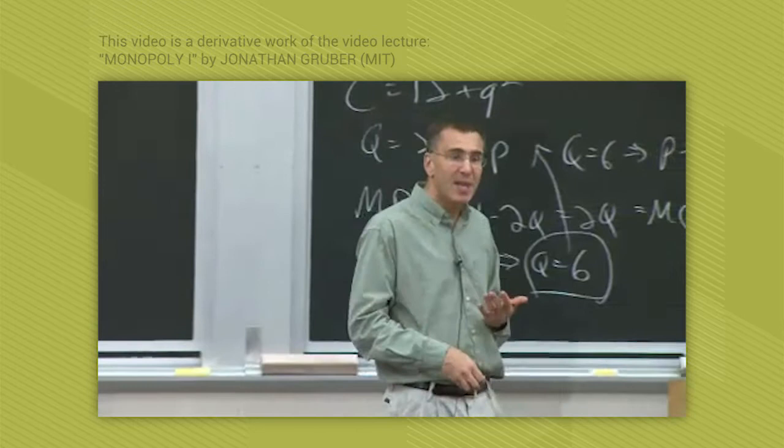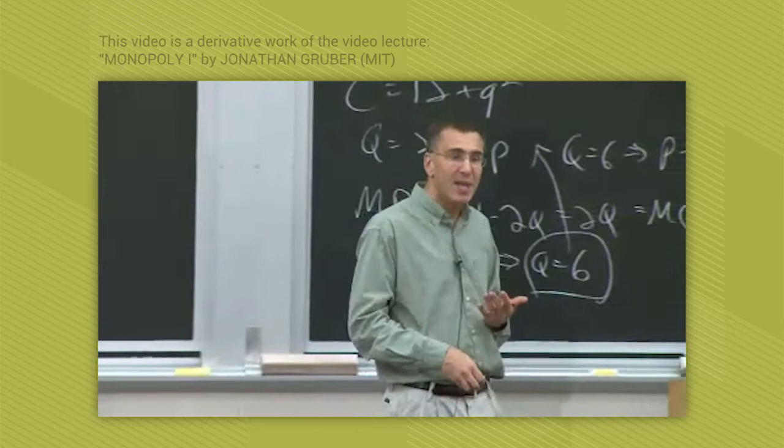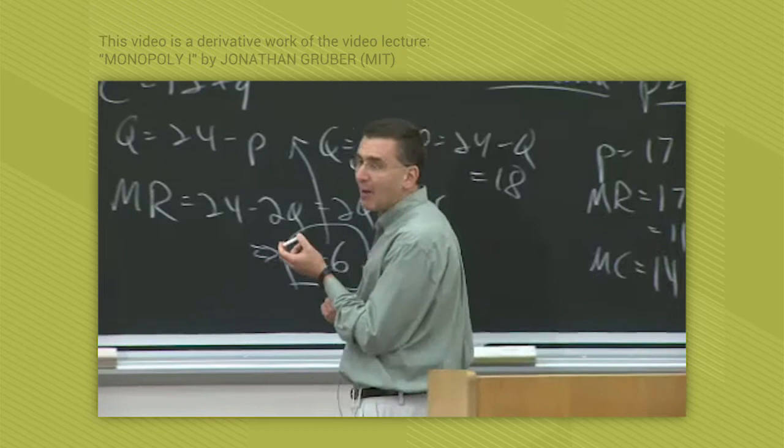So basically at some point there is some elasticity because it's a market demand curve. And basically what's going to determine how much market power the monopolist has is going to be how elastic it is, basically how close the substitutes are for that good.